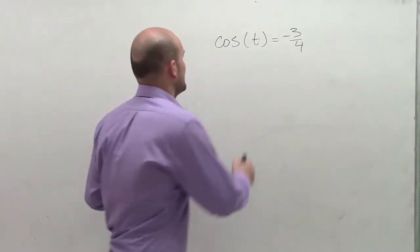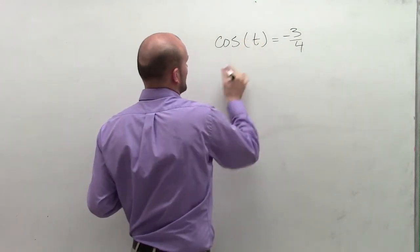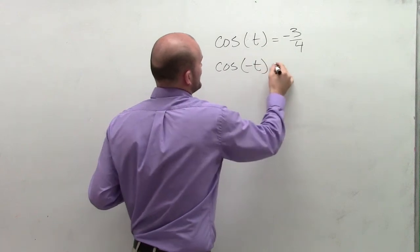And what I want to do is I want to evaluate for, let's say, cosine of t. And I want to figure out what is the cosine of negative t.